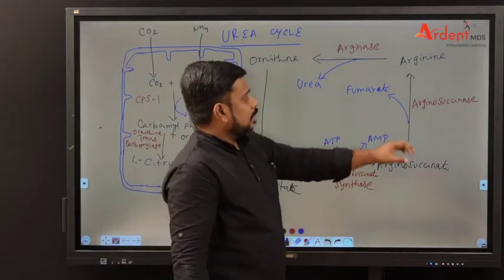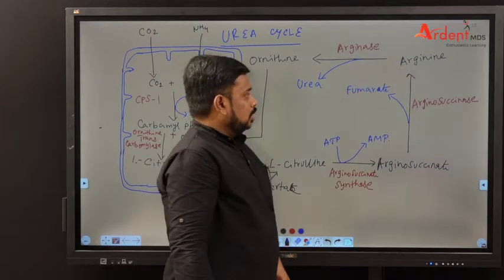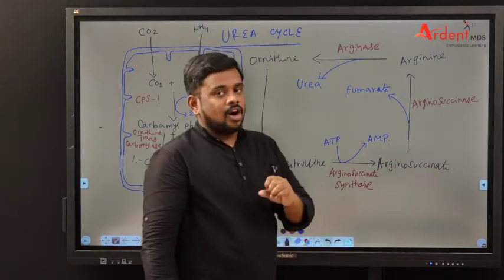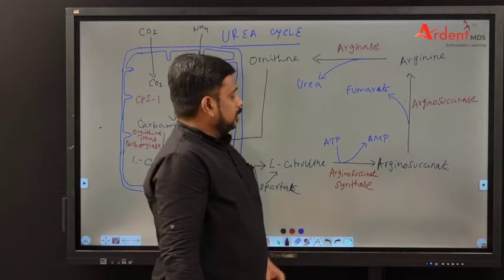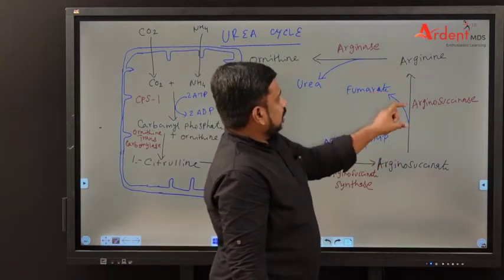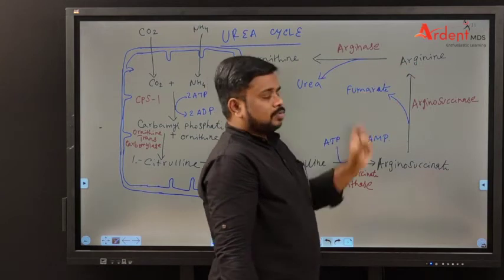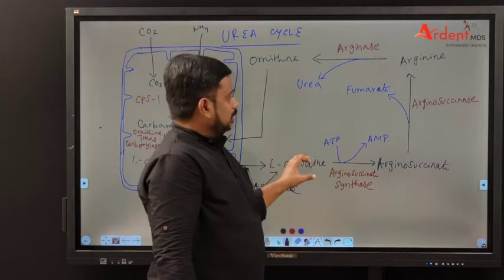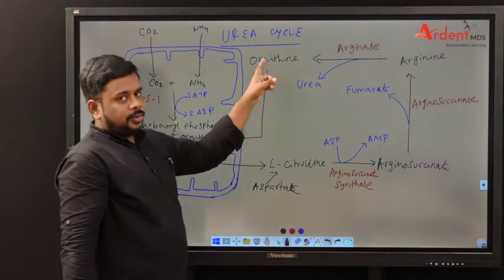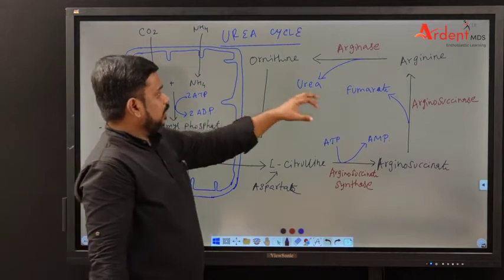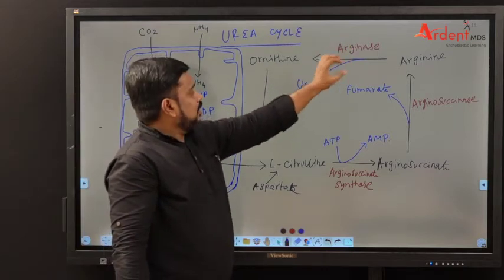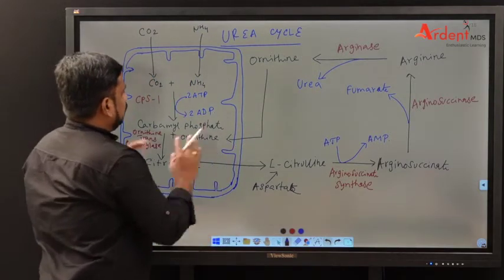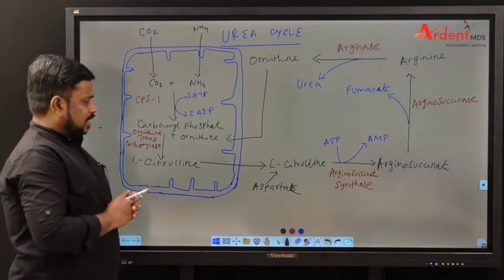Once arginosuccinate is formed, it is converted into arginine by the help of an enzyme called arginosuccinate lyase. Within this reaction, there is a byproduct that is formed called fumarate. This fumarate goes to the TCA cycle. Arginine is now converted into ornithine by the help of an enzyme called arginase. Here, one molecule of urea is synthesized. This is how the urea cycle occurs for the synthesis of urea.